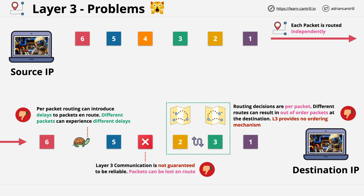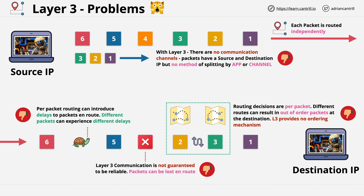Another limitation with layer 3 — probably the one with the most obvious effect — is that IP packets have a source and destination field but nothing beyond that to distinguish channels of communication. Packets from a source IP to a destination IP all look the same. You couldn't have two applications on the source IP communicating with two applications on the destination IP, because there's no method of distinguishing between them. Think about what you're doing right now — you might be watching a video, have a browser open, an SSH connection, or email. IP on its own offers no way to separate packets for individual applications.